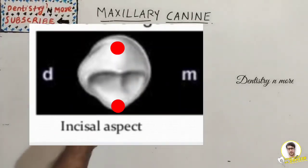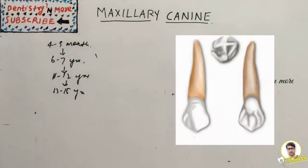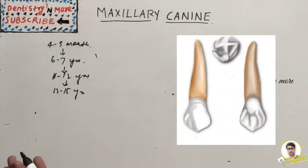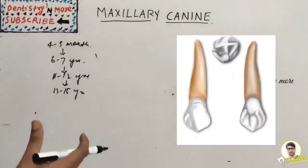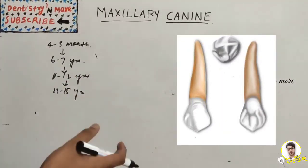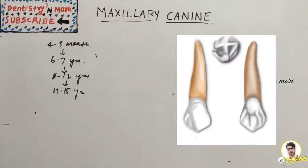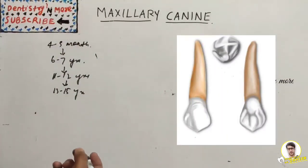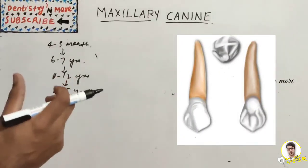Regarding the root: it is the longest and strongest of all teeth in the mouth. The mesial and distal surfaces of the root have developmental depressions. From all aspects, the root tapers gradually to a sharp or slightly blunted apex, and it is wider labiolingually than mesiodistally.